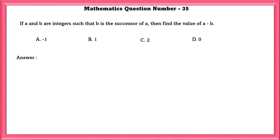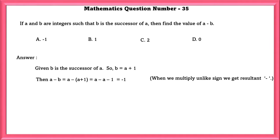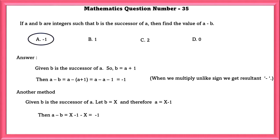Mathematics question number 35. If A and B are integers such that B is the successor of A then find the value of A minus B. Given B is the successor of A. So B is equal to A plus 1. Then A minus B is equal to A minus A minus 1 which is equal to minus 1. Another method is that given B is the successor of A. Let B be X and therefore A is equal to X minus 1. Then A minus B is equal to minus 1.